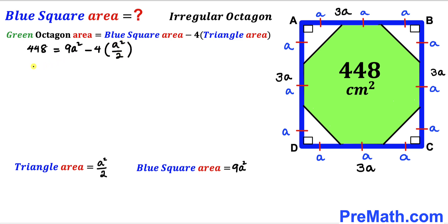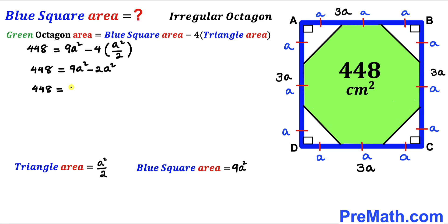Simplifying: 448 = 9a² − 2a², which gives 448 = 7a². Dividing both sides by 7, we get a² = 64.